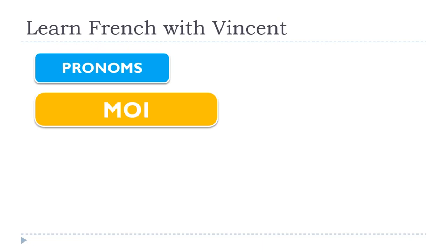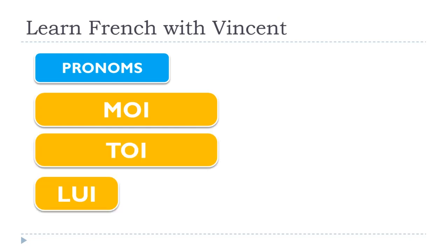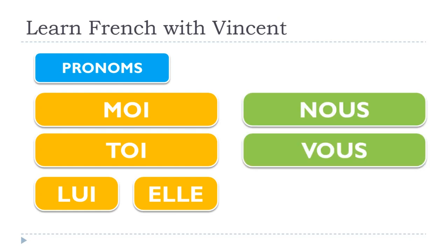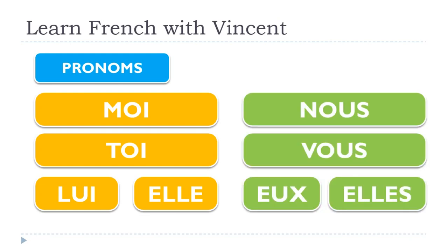Let's see the pronouns we'll have to use — they are called les pronoms toniques. « Moi », « toi », « lui », « elle ». Remember we make the difference between the masculine « lui » and « elle » for the feminine. Then plural: « nous », « vous », « eux », « elles ». So: moi, toi, lui (masculin), elle (féminin), nous, vous, eux (masculin), elles (féminin).